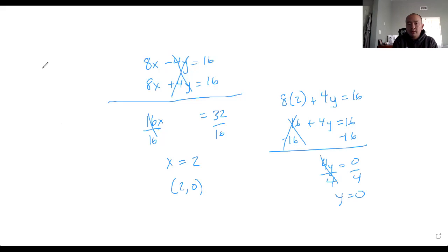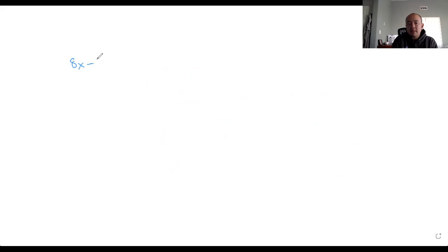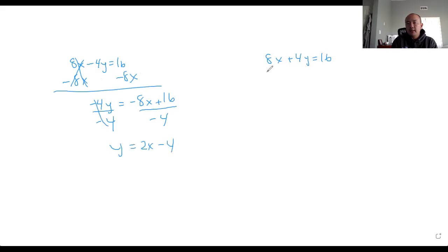If you want to use the substitution method, remember how we got it into slope-intercept form? We got into slope. So 8x minus 4y equals 16, 8x plus 4y equals 16. So we want to isolate a variable. And that's what we did before. So you subtract the 8x. And we have negative 4y equals negative 8x plus 16. You divide by negative 4. And so y equals 2x minus 4.